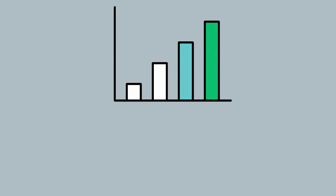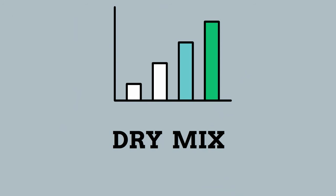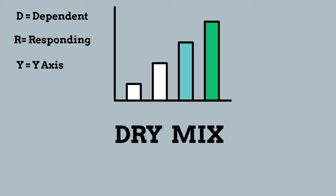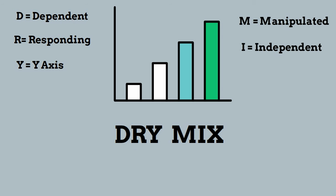When graphing the independent and dependent variables, you can remember which axis they go on by using DRY MIX. The D stands for the dependent variable, the R stands for responding variable, and the Y stands for Y axis. The M of MIX stands for manipulated, the I stands for independent, and the X stands for X axis. Hope this helps your understanding of independent and dependent variables.